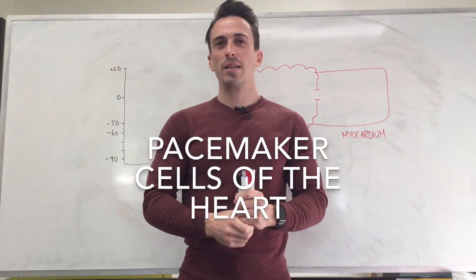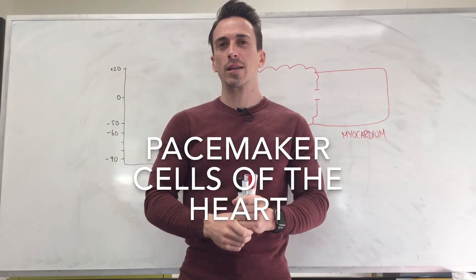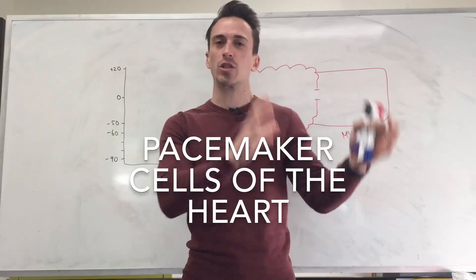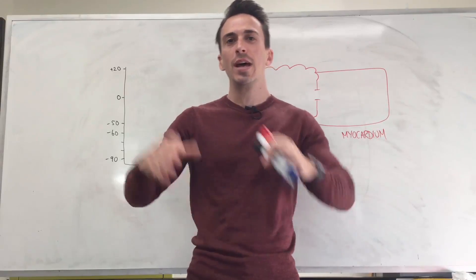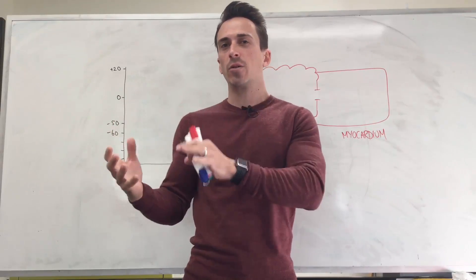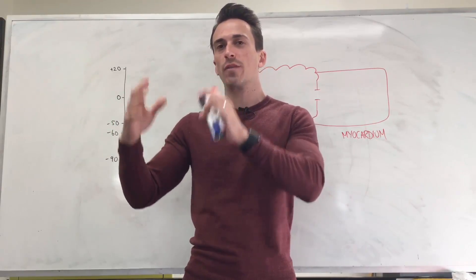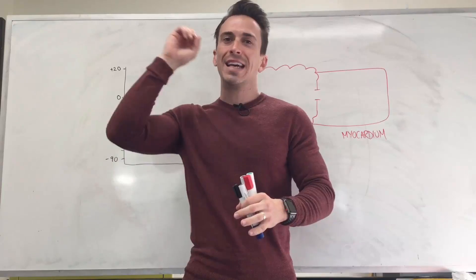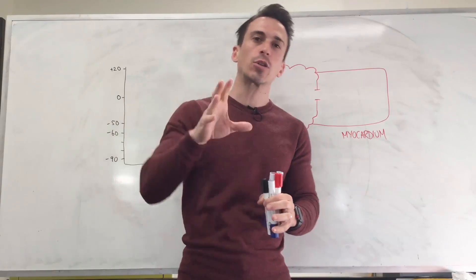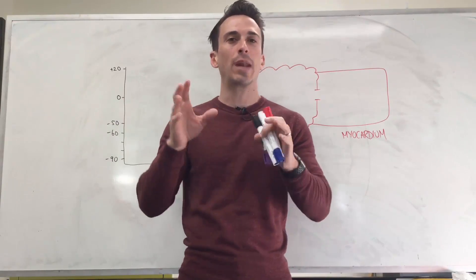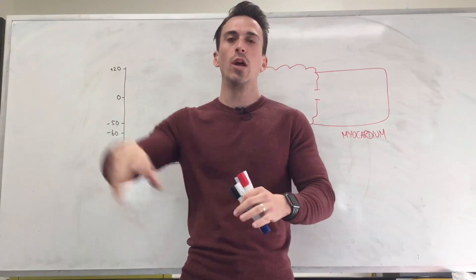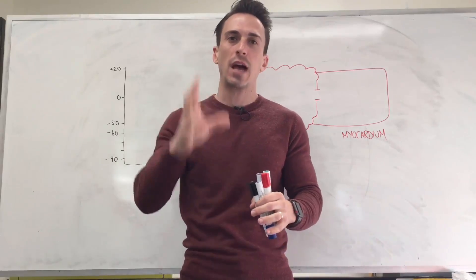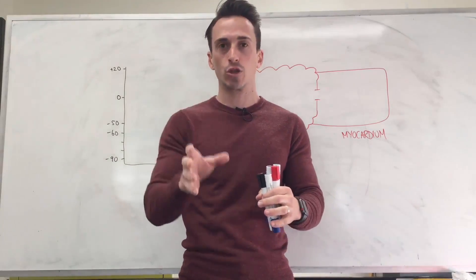Hi everybody, Dr. Mike here. In this video we're going to take a look at how the SA node, which is the sinoatrial node, and the AV node, which is the atrioventricular node, how they send their signal — their electrical signal that we term an action potential — to the rest of the muscle of the heart to tell it to contract.